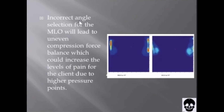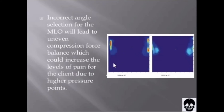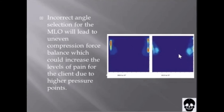Incorrect angle selection for the Mediolateral oblique will lead to uneven compression force balance, which could increase the levels of pain for the client due to higher pressure points. This image shows the footprint of the breast — the right-side Mediolateral oblique with the client positioned at an incorrect 45-degree angle, compared to the correctly selected 55-degree angle which highlights correct compression force balance.